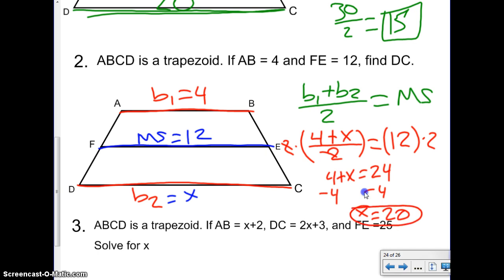And what were we looking for? It was B2. So, B2 or DC, which they told us before, is equal to 20. Alright.